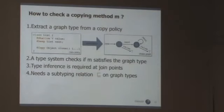Now, how do you check a copying method? Well, you start from the description of the policy over here. So we take this, we look at the annotations, how they are marked, and then from that, you extract a graph structure that represents the policy.